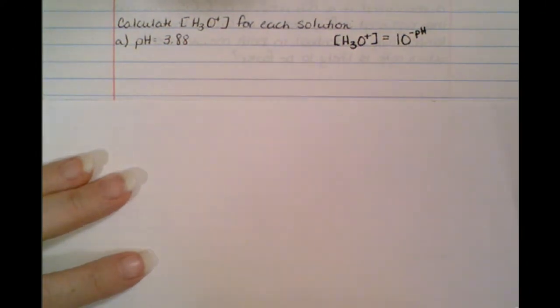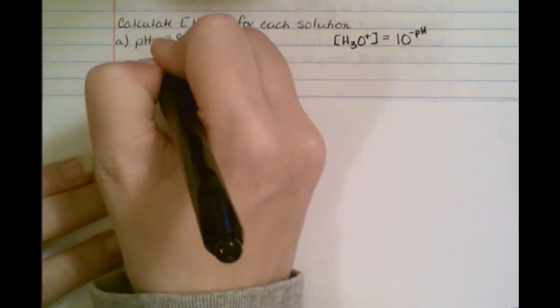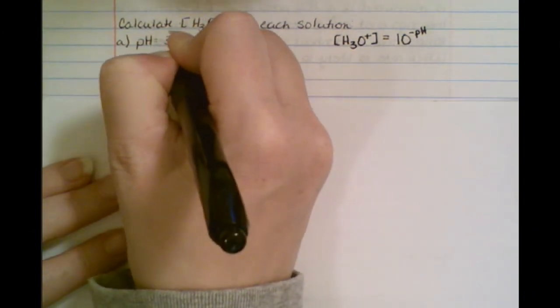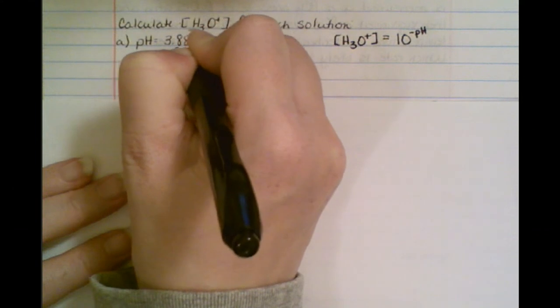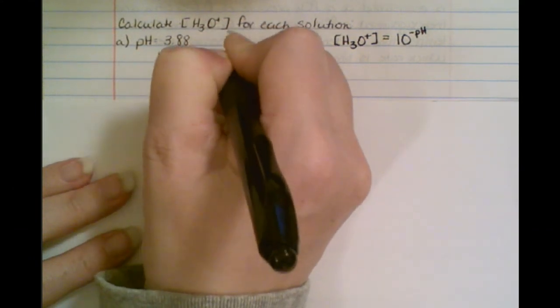But what exactly does that mean? I'm going to show you how to work these on your calculator. So automatically if I see I have a pH and I need to find a concentration, this is just going to be 10 to the minus 3.88 equals the concentration.